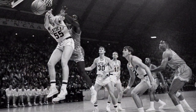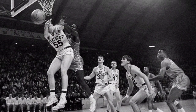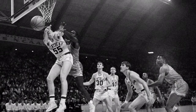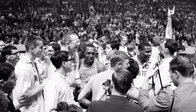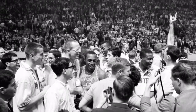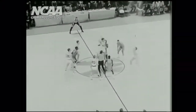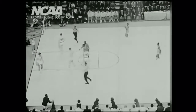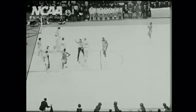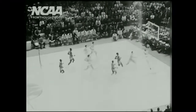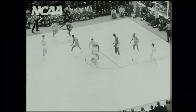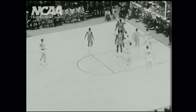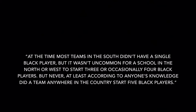One reason the 1966 team was so successful was that they worked very well together despite the racial stereotypes and boundaries thrown their way. Their strong team dynamic showed as they entered the NCAA tournament with a 23-1 record. On March 19th, Texas Western played the University of Kentucky in the championship game. Texas Western had a 12-man roster with seven black, four white, and one Latino player. Don Haskins took a stand by starting and playing only his seven African Americans against the all-white Kentucky team.